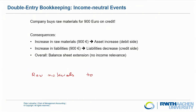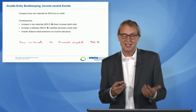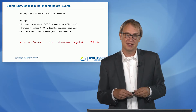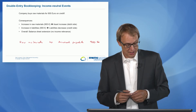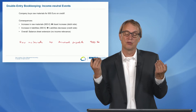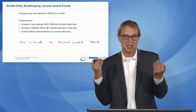We also have an increase in liabilities because we bought on credit. Liabilities are on the right side of the balance sheet, and an increase for something on the right side is booked on the credit side. So it is accounts payable for 900 euro. Overall, we have a balance sheet extension: raw materials increase the asset side, and liabilities increase the liabilities side, so the sum of the balance sheet grows by 900 euro on each side.